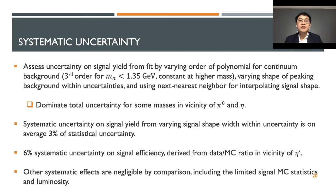Now let's talk about the systematic uncertainty. The most important systematic uncertainty arises from the shape of the signal fit. We assess it by varying the order of the polynomial continuum background, adjusting the shape of the peaking background within the uncertainties, and using the next nearest neighbor for the signal interpolation. These uncertainties can dominate the total uncertainties for some masses in the vicinity of pion and eta due to the difficulty on describing the total background. Besides, we also assess the uncertainties from varying the signal shape with the signal efficiencies. The rest of the systematic uncertainties are subdominant, but we also include them in the final result.